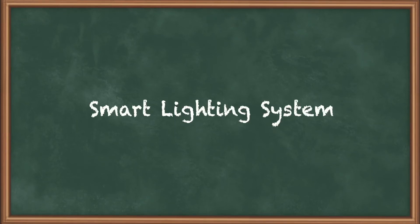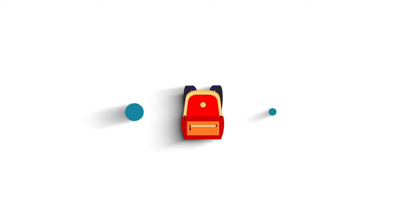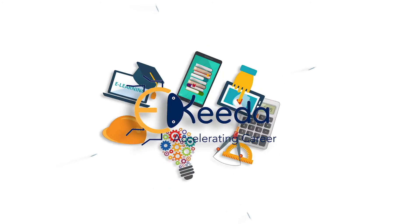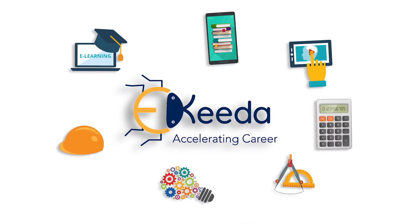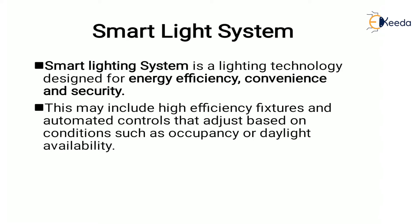Hello everyone. Let's start with the next topic which is smart lighting system. A smart lighting system is a lighting technology designed for energy efficiency, convenience and security. This may include high efficiency fixtures and automated controls that adjust based on conditions such as occupancy or daylight availability.